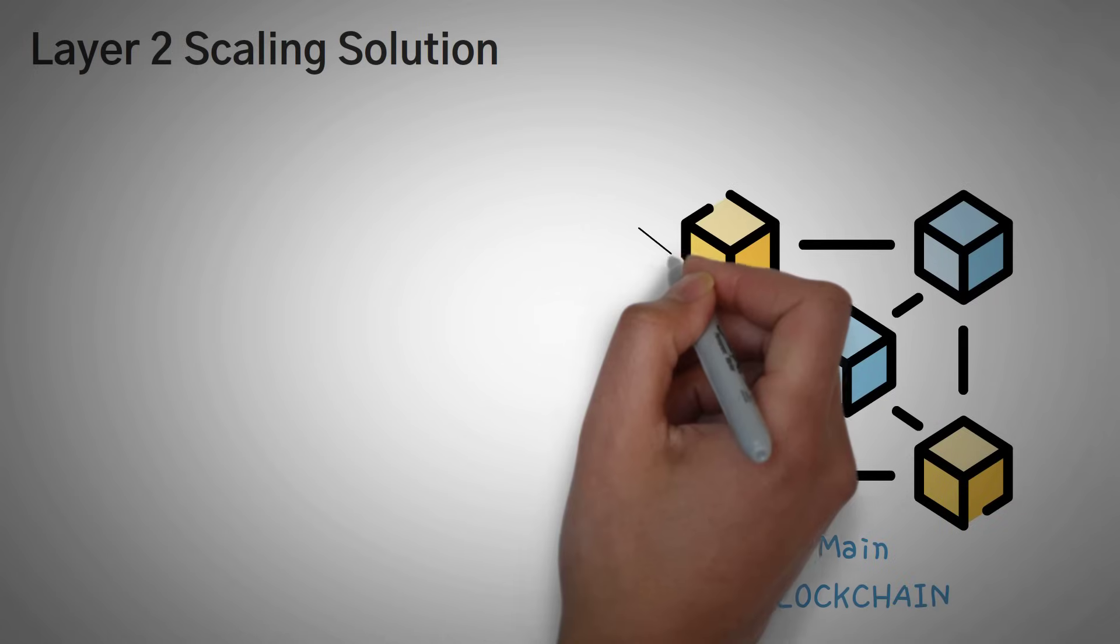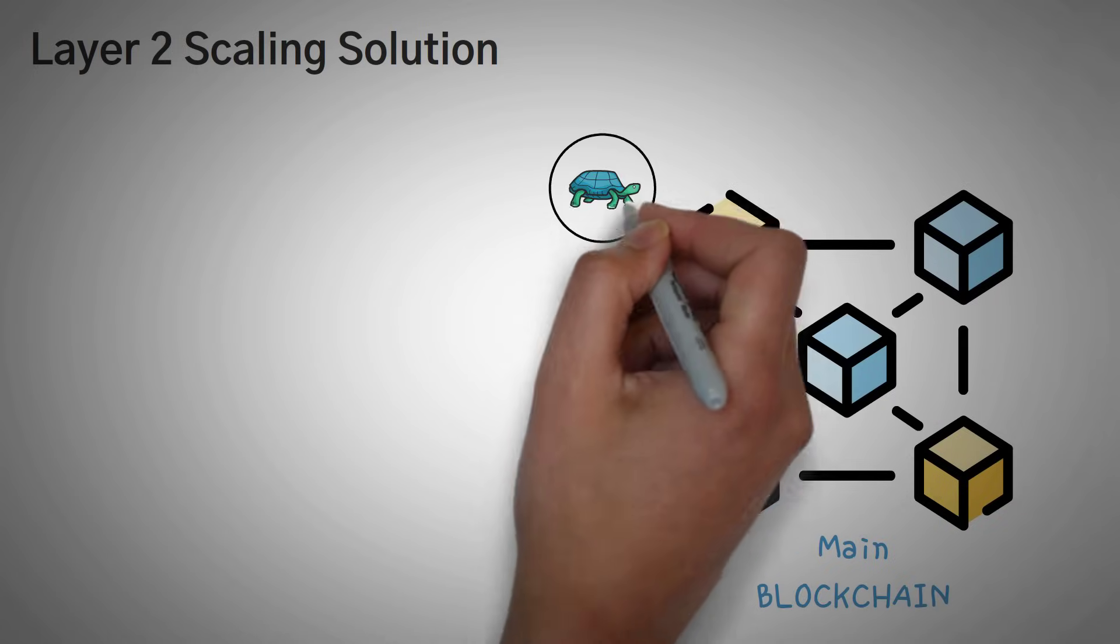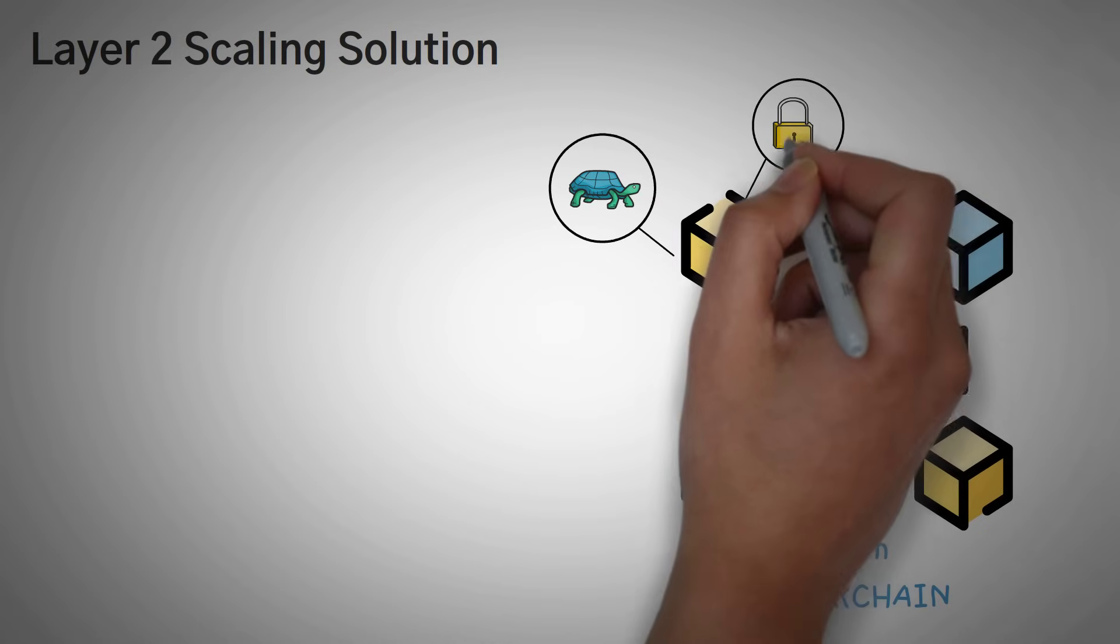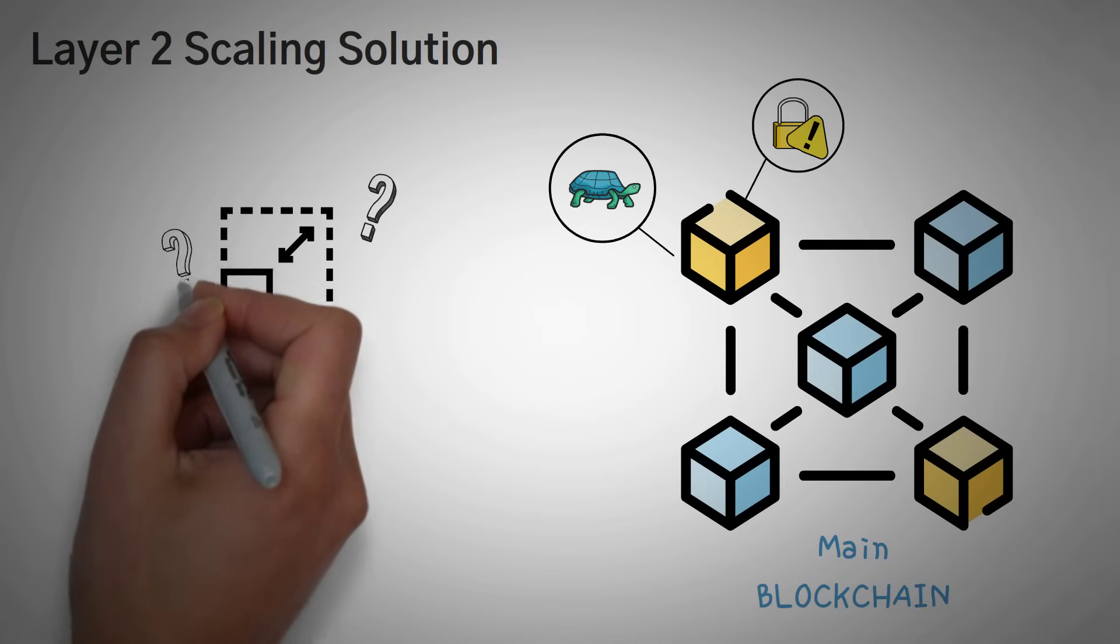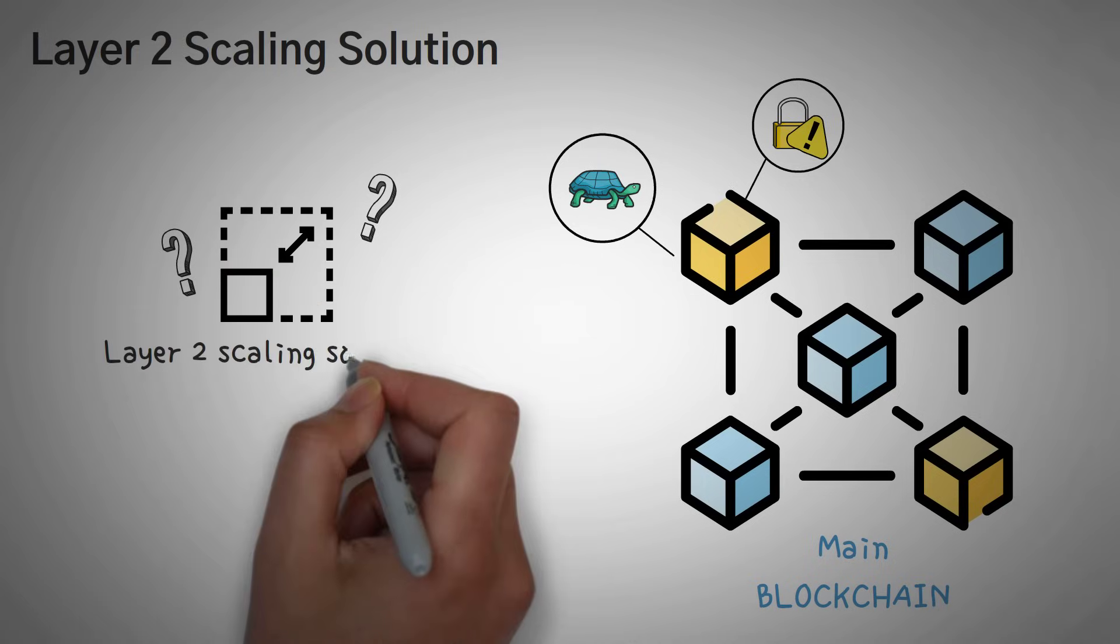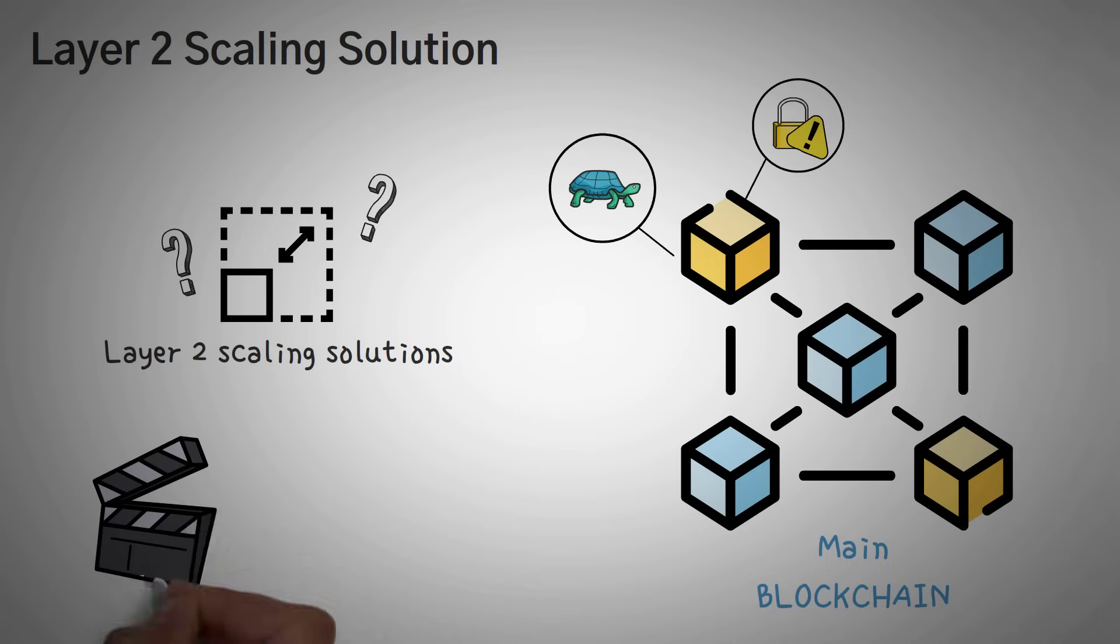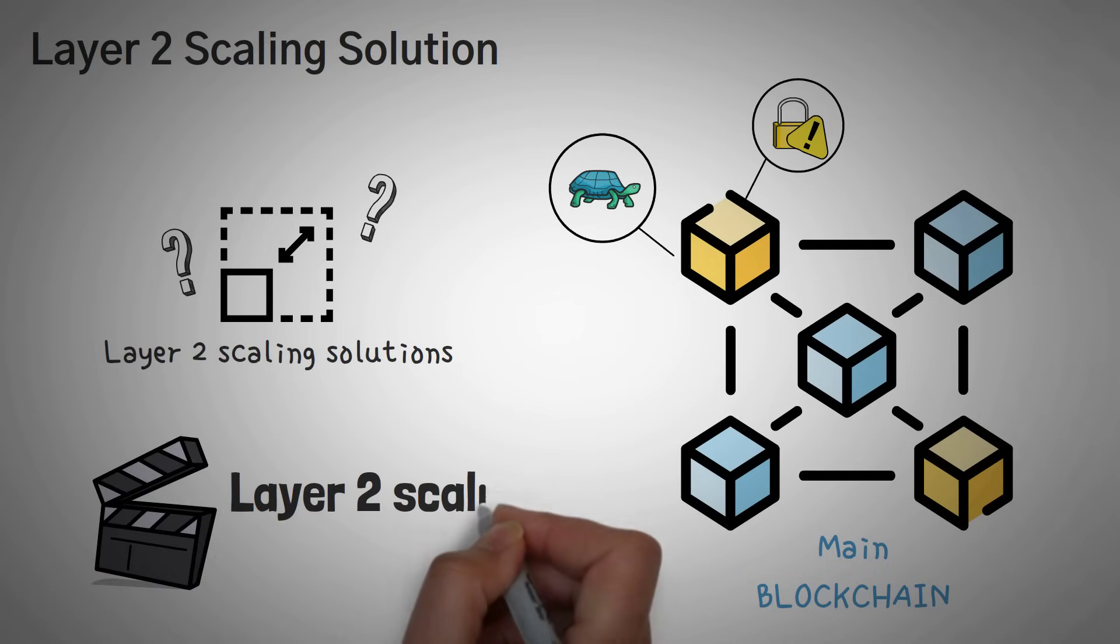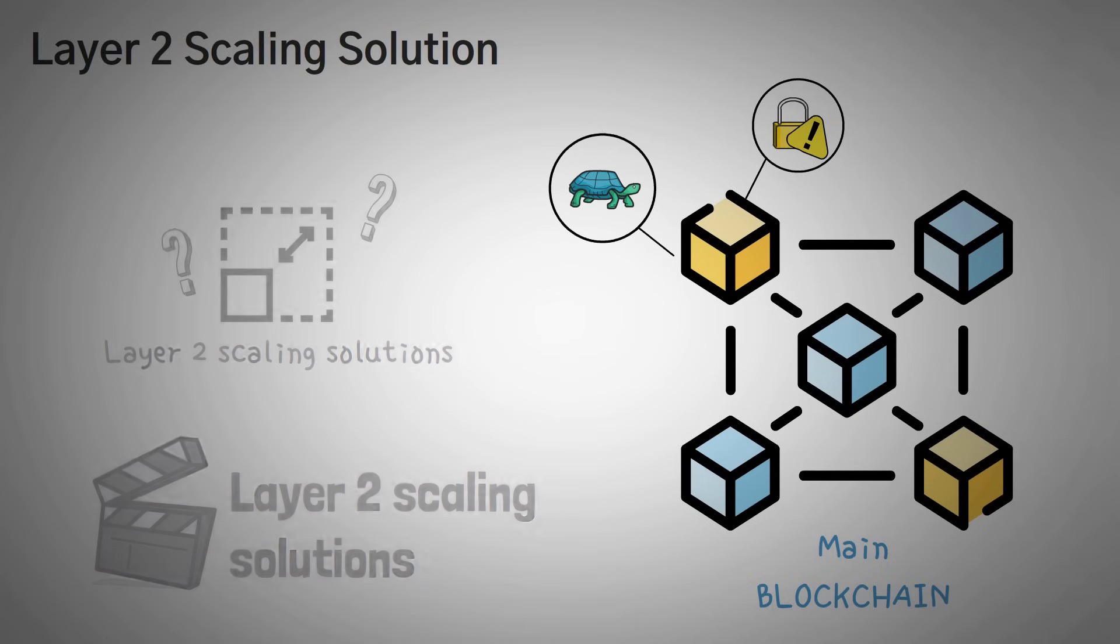Basically, main blockchains are really slow, and if we want to try to speed them up, they either aren't as secure or they aren't as safe, so we have to find a secondary method to make them faster. These solutions are called layer 2 scaling solutions, and we actually have a whole video where we briefly go over a bunch of popular ones, but this is a specific video about one called sidechains.